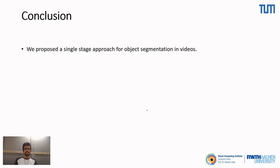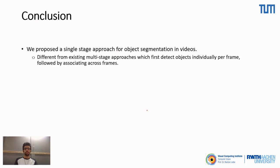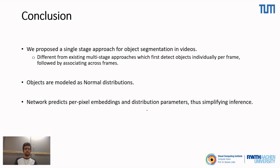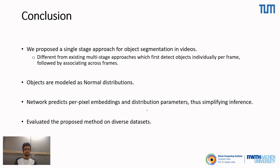To conclude, we proposed a single-stage approach for object segmentation in videos, quite different from existing multi-stage approaches that first detect objects in each individual frame and then use a separate mechanism for associating detections across time. We modeled object clusters as multivariate Gaussian distributions and created a network predicting per-pixel embeddings and variances, allowing object distribution parameters to be obtained almost directly from the network — simplifying inference, speeding up the method, and making it end-to-end trainable. We evaluated our method on three different datasets containing a diverse range of video scenes and showed it performs well on all three. Thank you for listening.